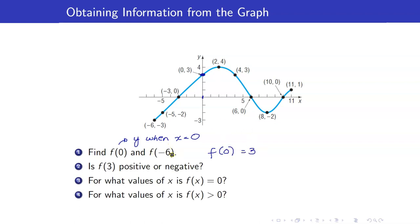For f(negative 6), this is the y-coordinate when x equals negative 6. Looking at the graph when x equals negative 6, the corresponding point has y-coordinate negative 3. Next, is f(3) positive or negative? f(3) is the y-coordinate when x equals 3. Looking at the corresponding point, that y-coordinate is definitely positive because it appears above the x-axis.